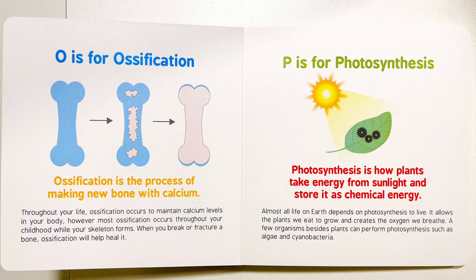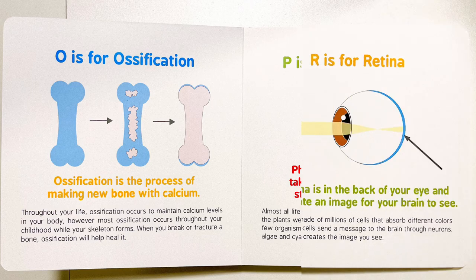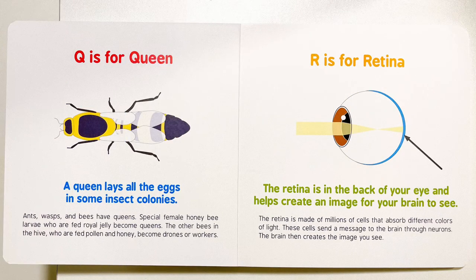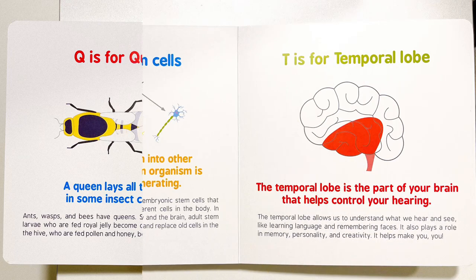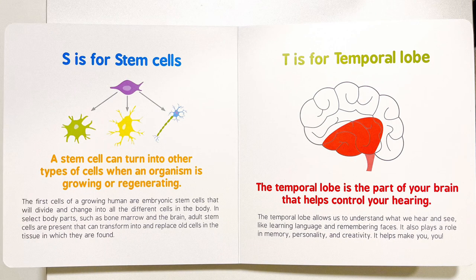O is for ossification. P is for photosynthesis. Q is for queen. R is for retina. S is for stem cells.